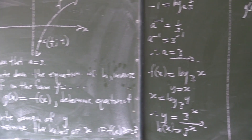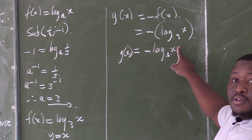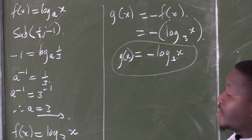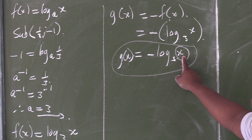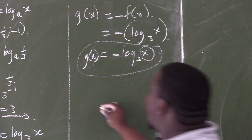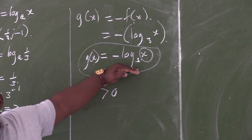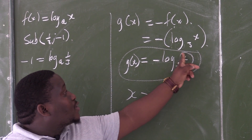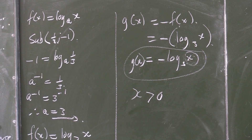Part D: write down the domain of g. We have g of x equals negative log base 3 of x. For a log graph, the value inside the log must always be positive. Therefore, x must always be greater than zero. That is the domain.